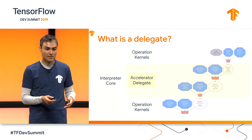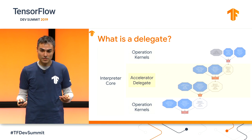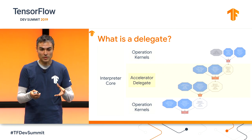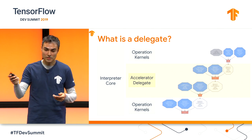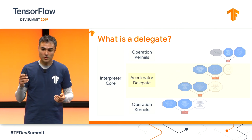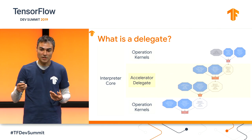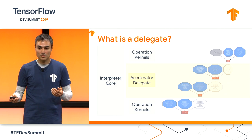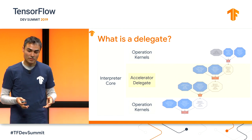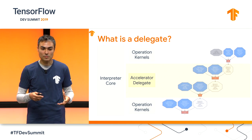A delegate is our abstraction layer that allows executing models beyond the CPU. When you prepare a model in TensorFlow Lite, you're not necessarily saying this model is for this hardware — you just prepare your model. The interpreter will then check each registered delegate to ask: how much of this graph can you execute? What the delegate cannot execute will be executed on CPU. By doing this, you will always be able to execute, and you'll get better performance if the delegate can consume more of your graph.